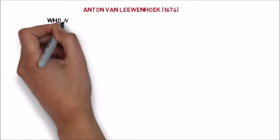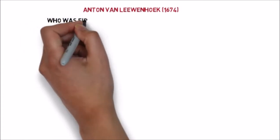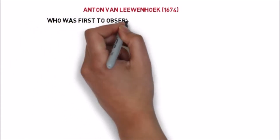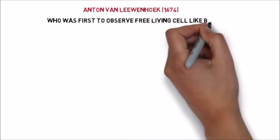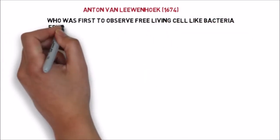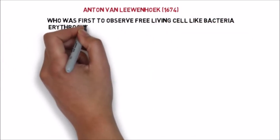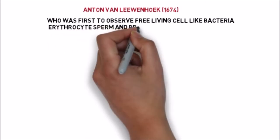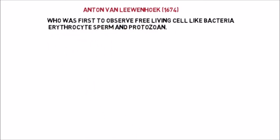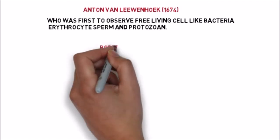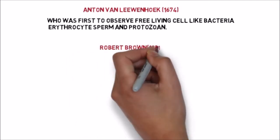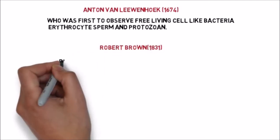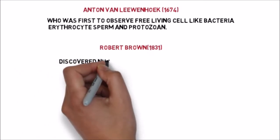The next scientist was Anton von Leeuwenhoek in 1674, who was the first to observe free-living cells in pond water. He observed bacteria, erythrocytes, sperm, and protozoa as free cells in pond water.